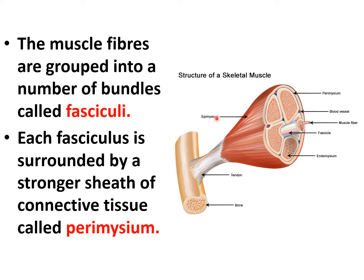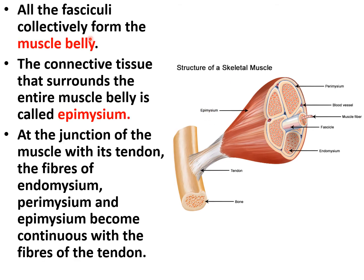All the fasciculi collectively form the muscle belly. The connective tissue that surrounds the entire muscle belly is called epimysium. At the junction of the muscle with its tendon, the fibers of the endomysium, perimysium, and epimysium become continuous with the fibers of the tendon.